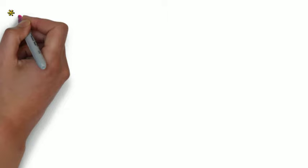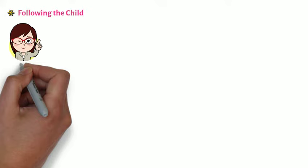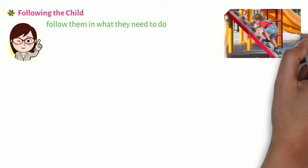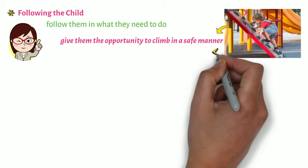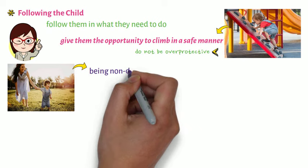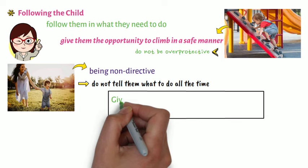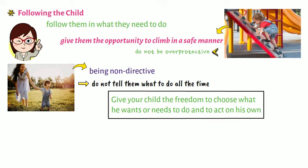On following the child. From what you have observed from the actions of the children, follow them in what they need to do. If they want to climb, give them the opportunity to climb in a safe manner — do not be overprotective. Following the child also means being non-directive; do not tell them what to do all the time. Give your child the freedom to choose what he wants or needs to do and to act on his own.